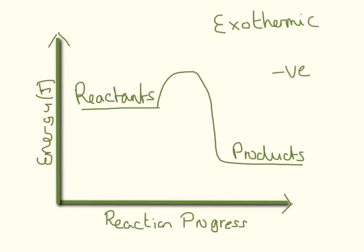So if we were looking at an exothermic reaction, this is what we would expect it to look like. We would expect the reactants to be here, the products to be down here. This line across here is the reaction progressing — so this is it starting, this is it finishing. And this is just how much energy they have.